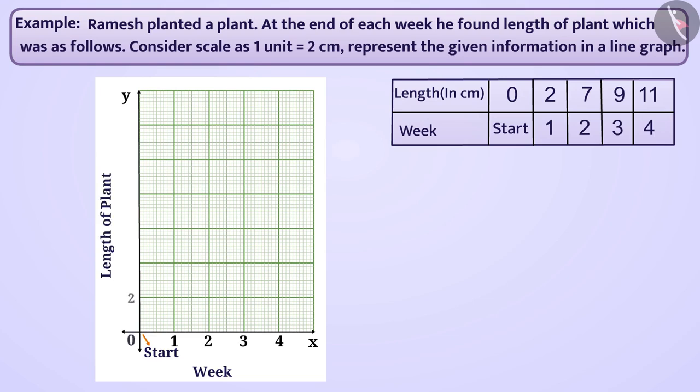Similarly, we will show the length of the plant on the y-axis by taking a scale of 1 unit is equal to 2 cm. As the maximum value here is 11 cm, we will end the length on the y-axis by a greater number such as 12 cm. Now, we will mark the data by point.